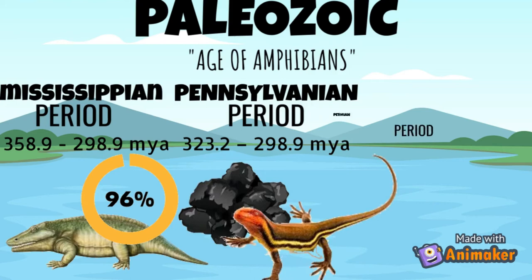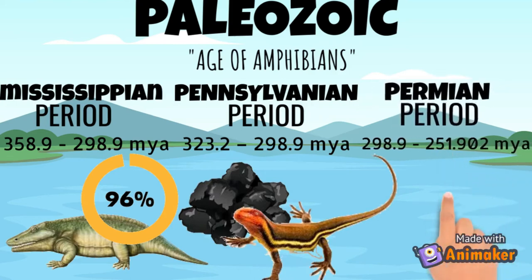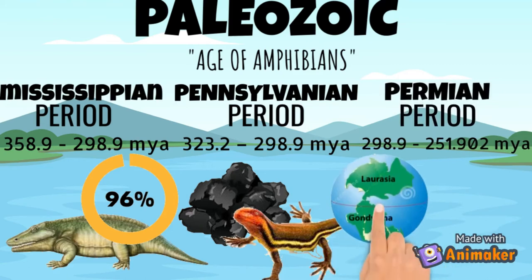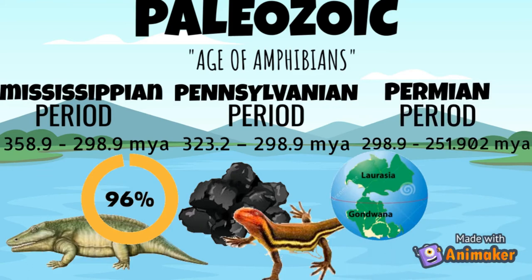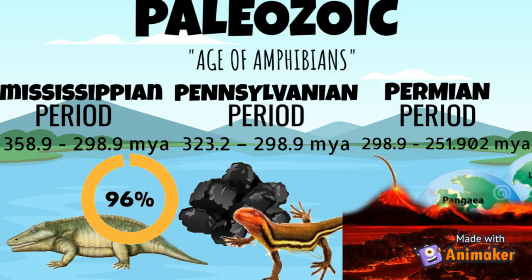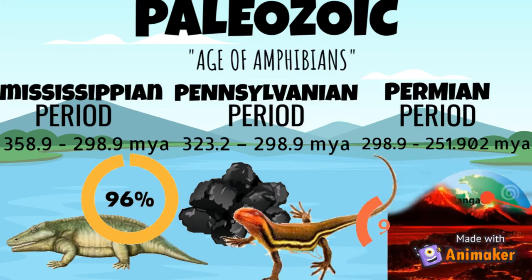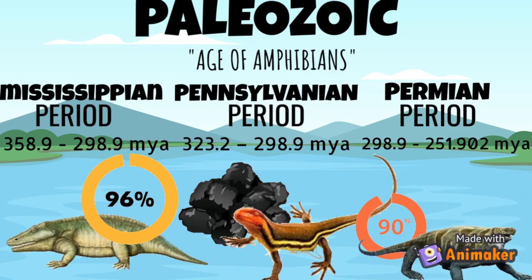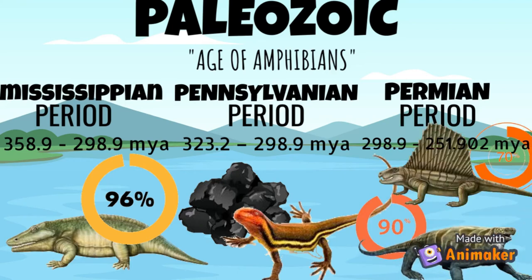The Permian period was 298.9 to 251.902 million years ago. Gondwana, Laurasia, and Siberia fused with smaller continents to form the supercontinent Pangea. The Permian extinction is estimated to have wiped out more than 90% of all marine species and 70% of land animals.